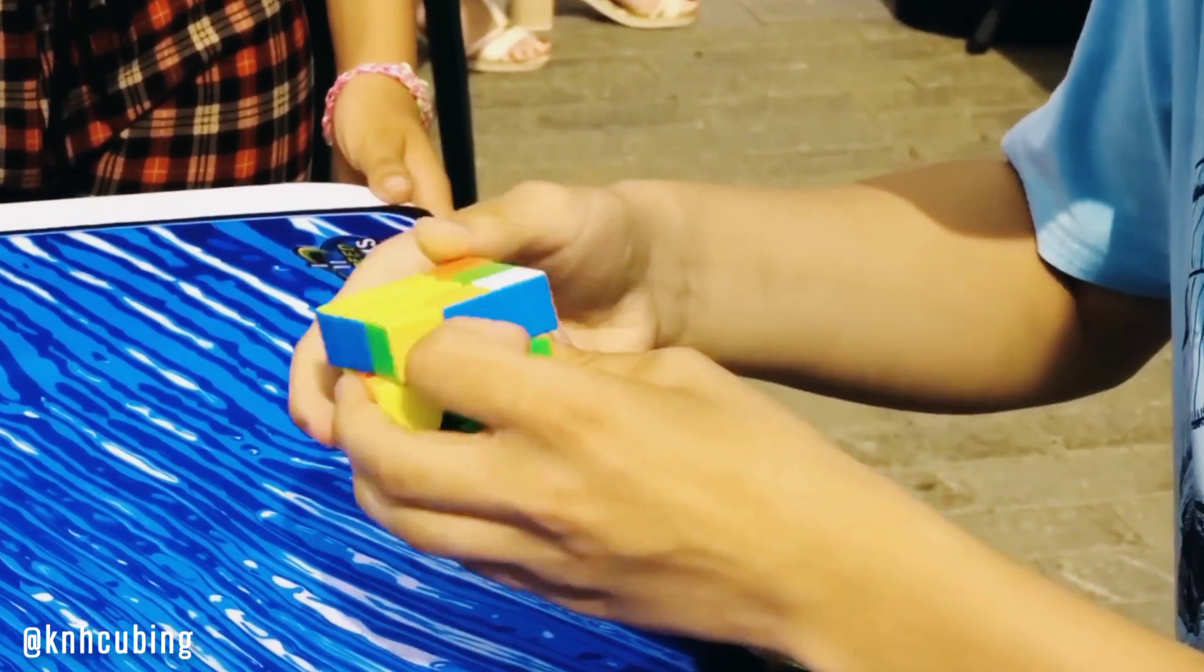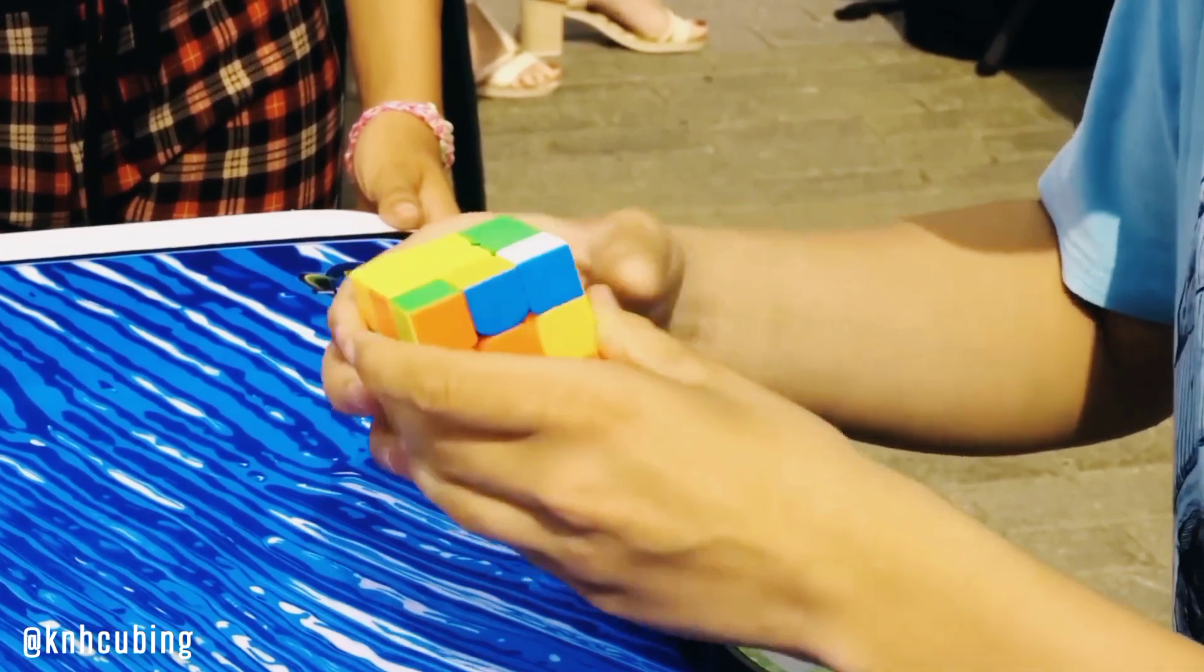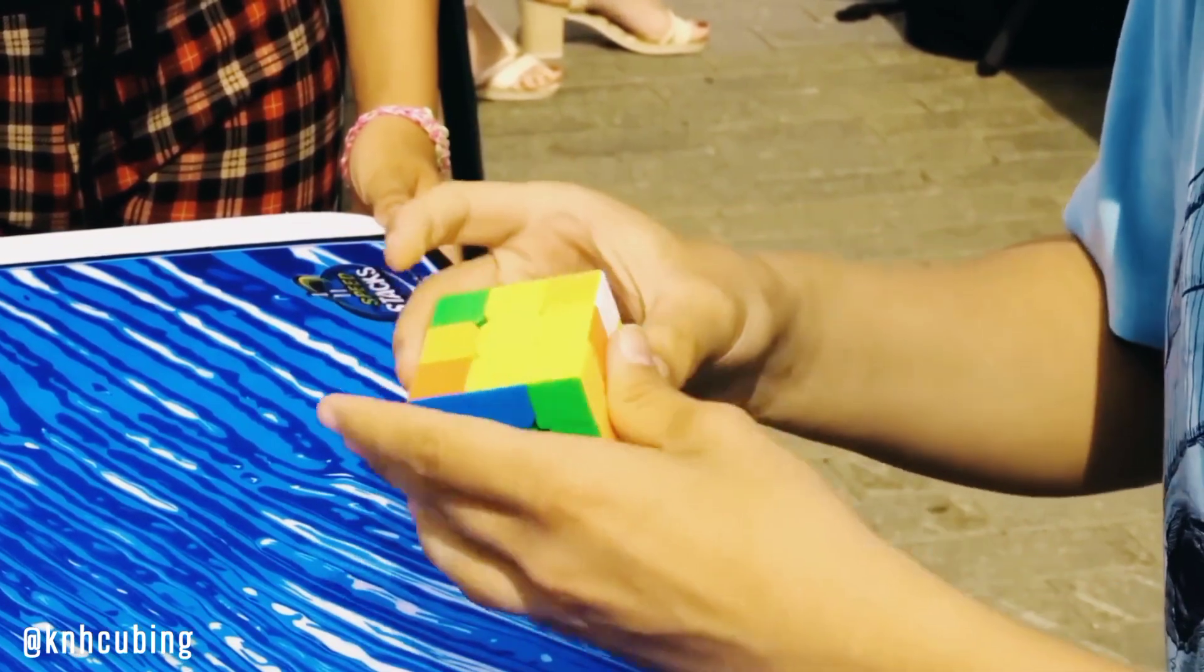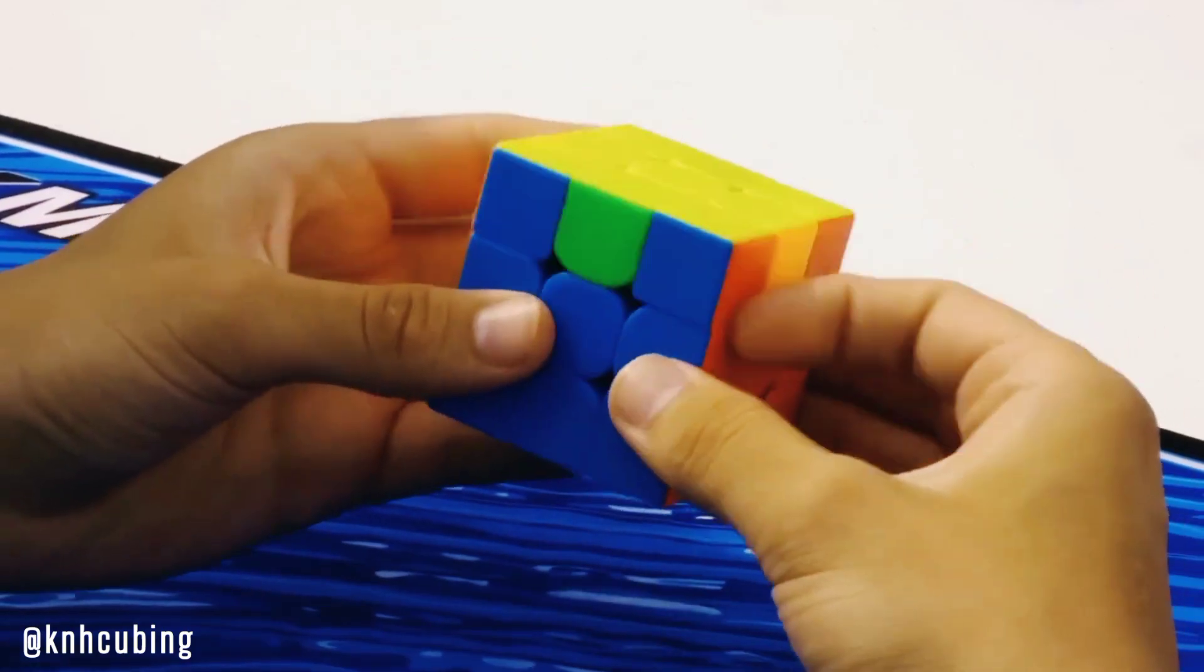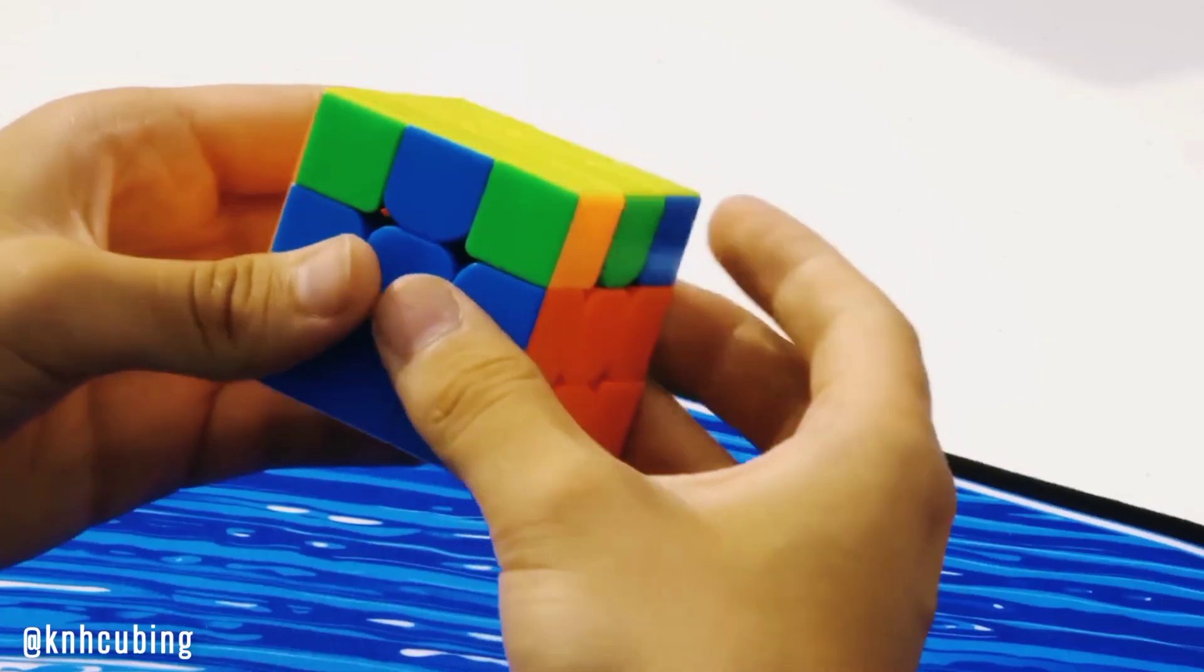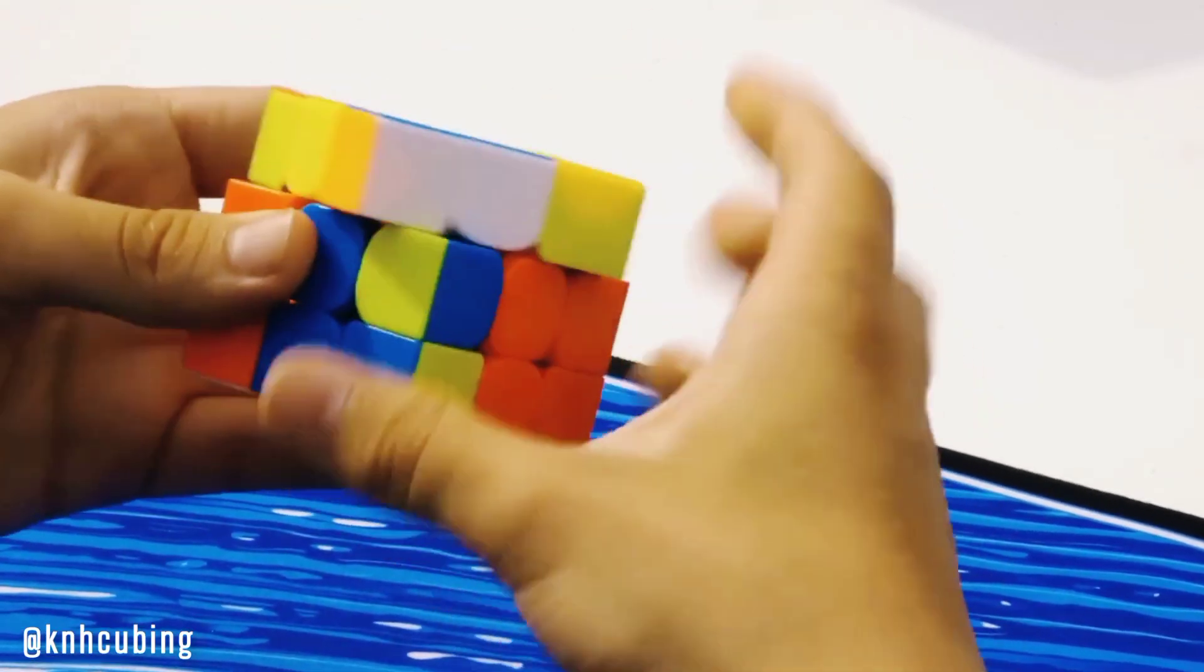The modern models are way more upgraded. They have better rotation mechanisms and magnets that allow the cubies to snap into position. This way, a speedcuber doesn't have to rotate all the way and can perform up to 12 turns in just one second.